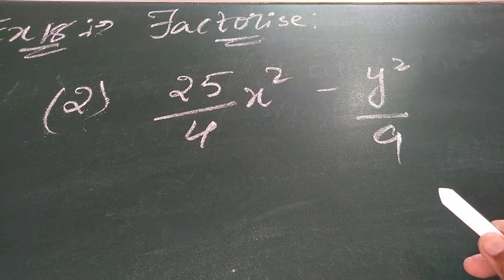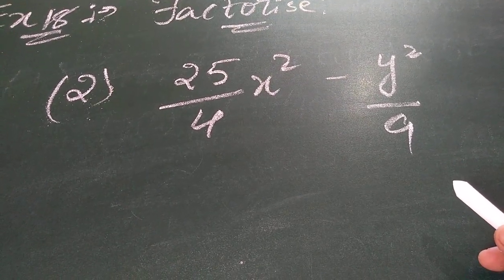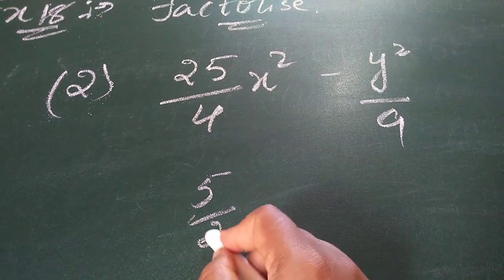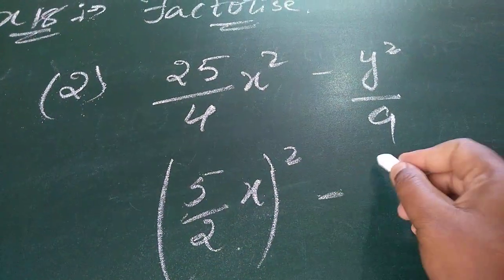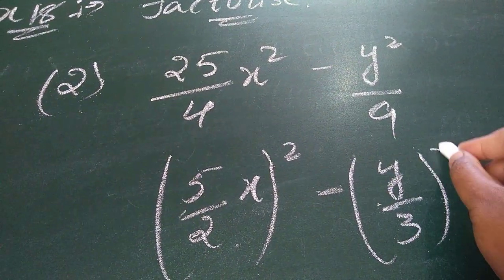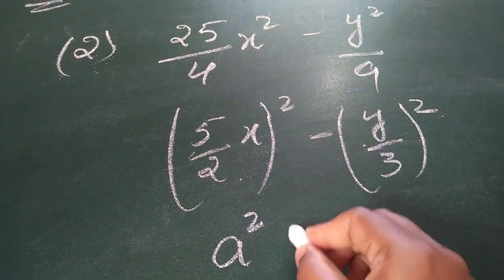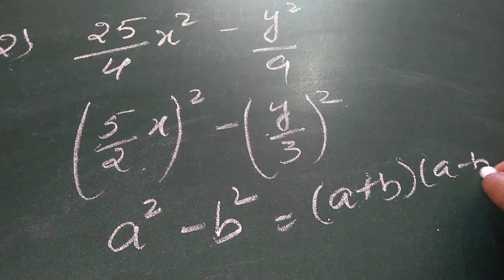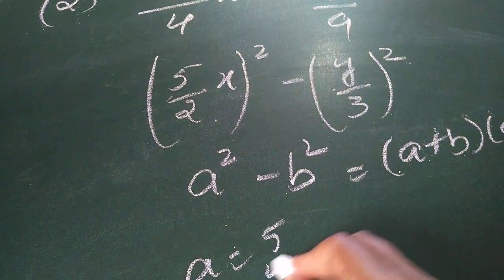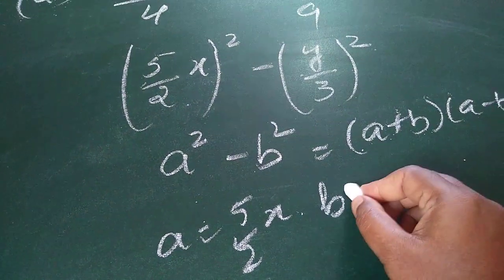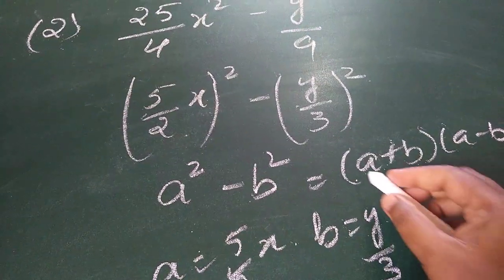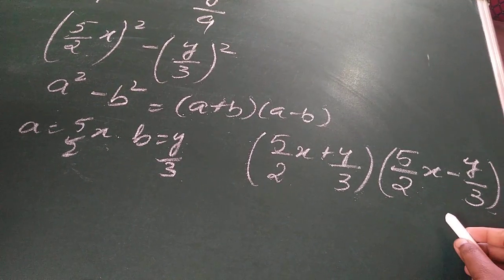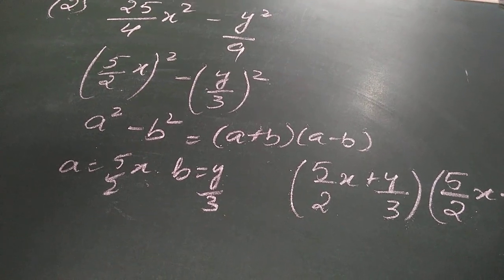This next question is about a binomial. Seeing this binomial, you will understand this is the third identity. 25 — whose square is 25? 5 square. So we have 5 by 2x whole square minus y by 3 whole square. This resembles the identity a square minus b square. Therefore, the solution is a plus b into a minus b, where a equals 5 by 2x and b equals y by 3. Wherever there is a, write 5 by 2x, and wherever there is b, write y by 3. This is the solution. Kindly copy in your notes. Thank you children, thanks for watching the video.